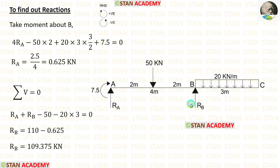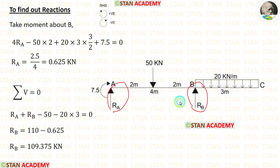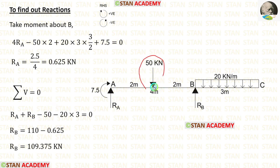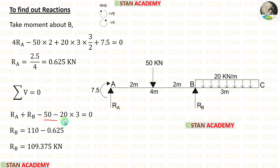To calculate RB, we apply the rule sigma V equals 0. RA and RB act upwards and are positive; the point load 50 kN and UDL 20 kN/m act downwards and are negative. Applying the already-calculated value of RA, we finally obtain RB.